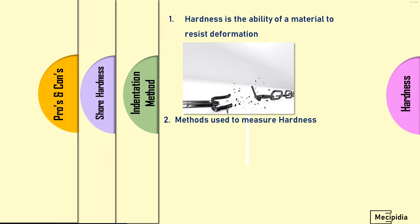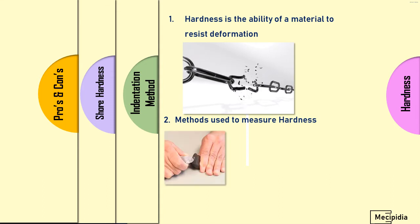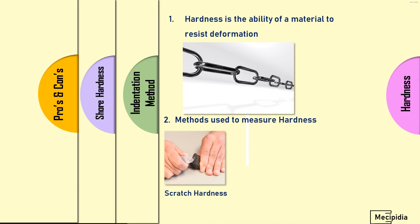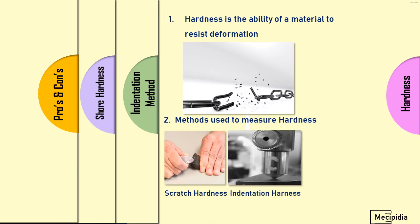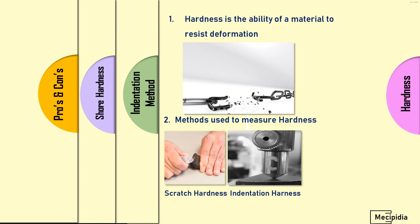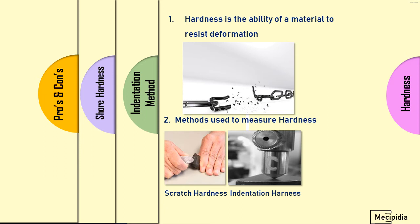There are three different methods used for measuring hardness. First is scratch hardness - by scratching the material, the hardness is measured. Second is indentation hardness, where a ball indenter with external force is pressed on the test piece. The indentation is measured and converted into